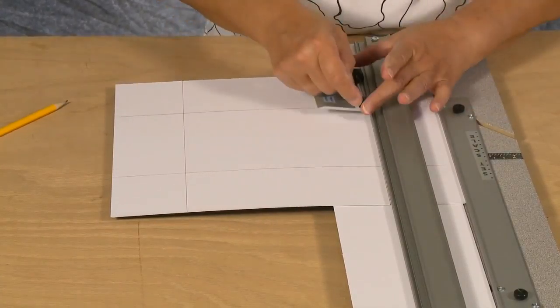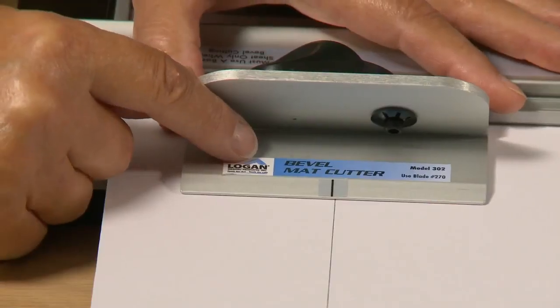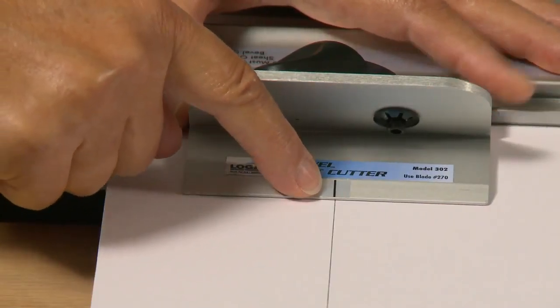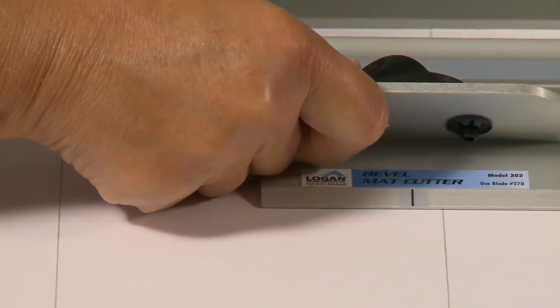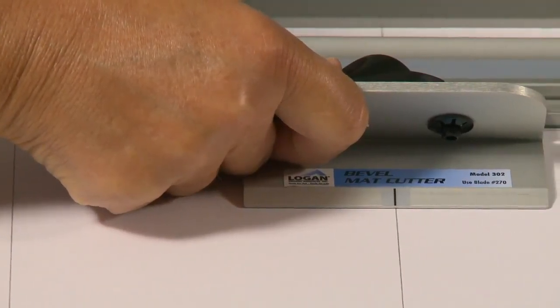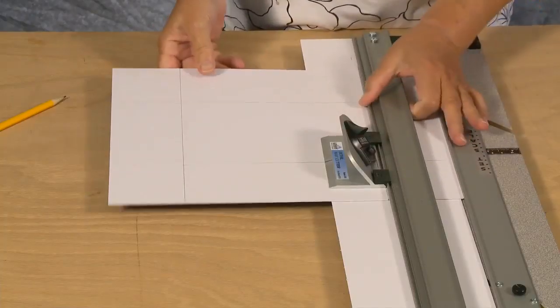Hook the bevel cutter onto the side of the guide rail at the line nearest you. Line up the start and stop indicator with the pencil line, insert the blade, and cut to the far line. Make sure you always remove the blade after each cut.